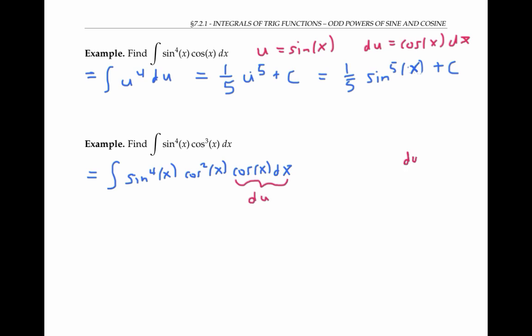Now if we have du as cosine of x dx, we're going to need u to be sine of x. But unlike the previous problem, I can't just replace sine to the fourth x with u to the fourth and cosine x dx with du and be done, because I've got this cosine squared x hanging around that I need to deal with.